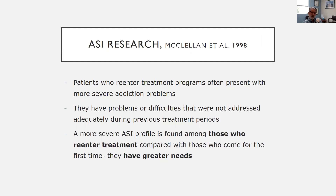McClellan's research on the ASI going back to 1998 found that people who return to treatment for more care tend to have higher ASI profiles. Needs that are not being met in their first course of treatment lead to recurring substance use issues and the need for more treatment. The complex problems patients face are not being addressed — programs may focus too much on addiction alone and not look at the whole patient situation.